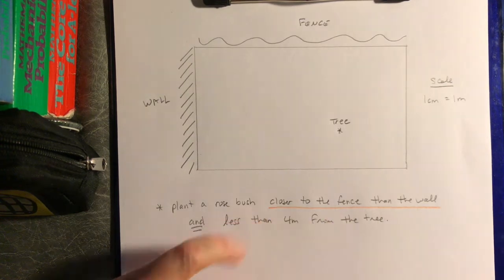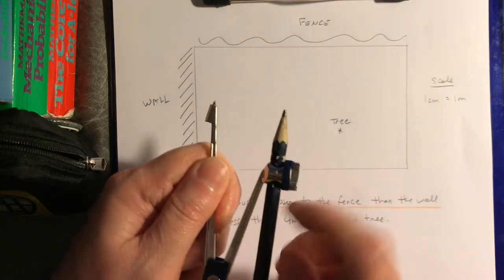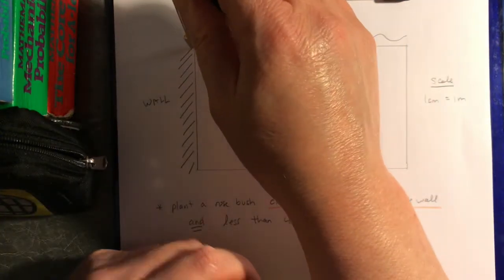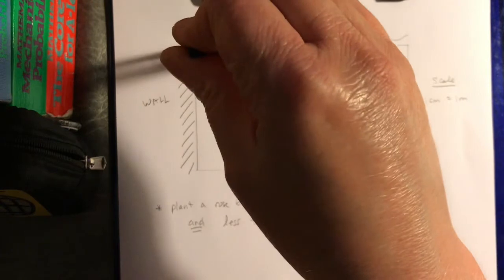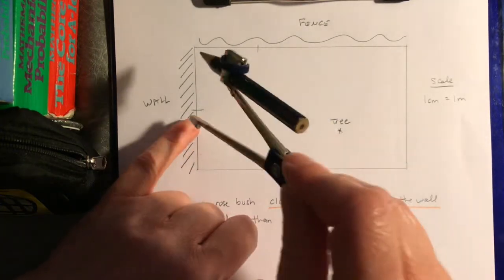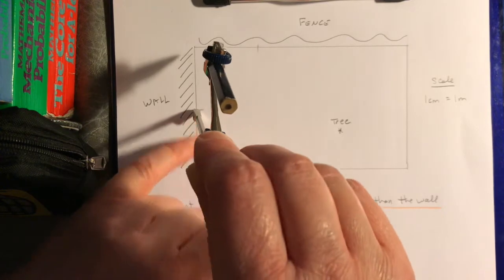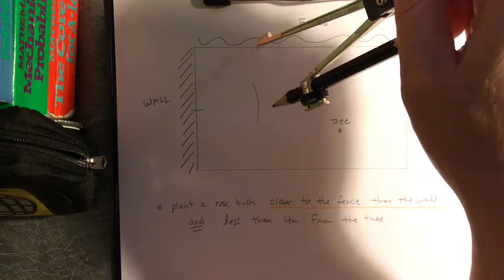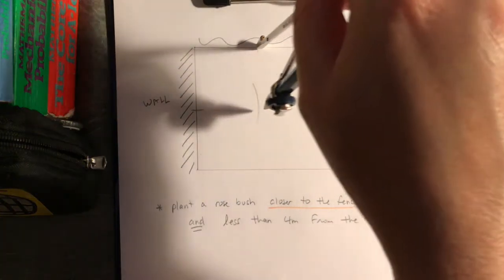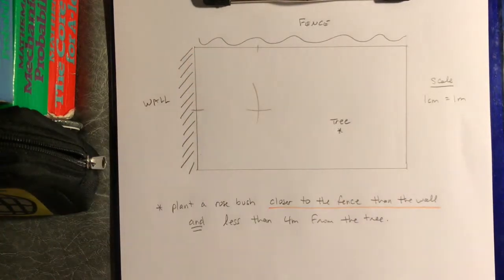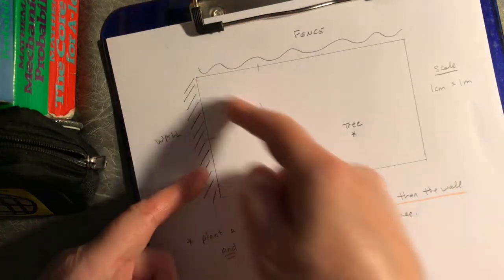So I'm going to figure out the angle bisector. Here are my compasses. Put the stabby end where the fence meets the wall and mark off an equal distance — a mark on the fence and a mark on the wall. Then put the stabby end where I measured off on the wall and swing an arc in the middle, then go over to the fence and swing another arc in the middle. This crossing point and my vertex — that's how I draw my angle bisector.